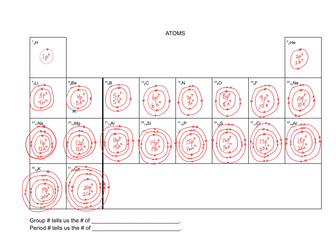Let's look for a few patterns. I'm going to number the group numbers going across the top: group one, group two, then I've squeezed out the transition metals and pushed group thirteen over, then fourteen, fifteen, sixteen, seventeen, and eighteen. What does the number one in group one have in common with each of those diagrams? And what does the number two have in common with each diagram in group two?